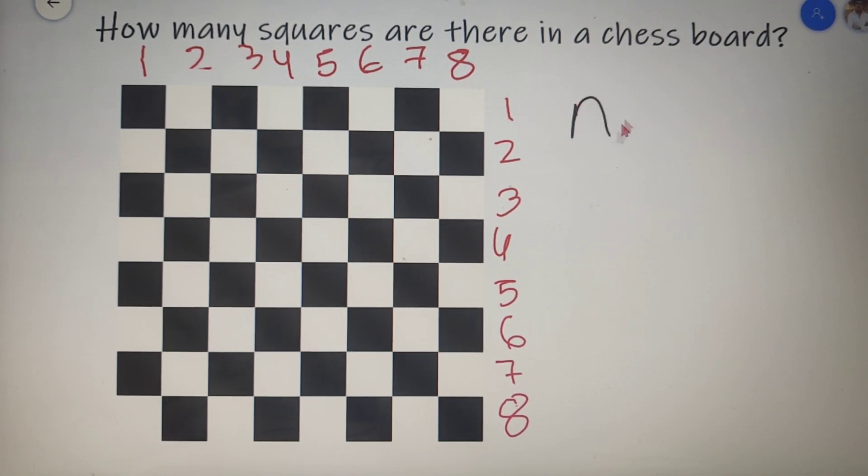So if I give you a n cross n grid, then you can say that the total number of squares in that grid will be equal to n square plus n minus 1 whole square all the way up to 1 square.